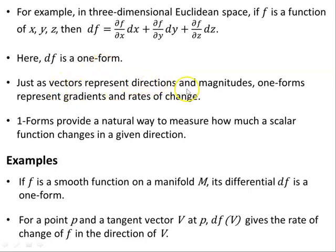Just as vectors represent directions and magnitudes, one-forms represent gradients and rates of change. One-forms provide a natural way to measure how much a scalar function changes in a given direction. And we saw that a couple of slides ago on the plot of f(x,y), where the one-form lines were close together lower down where it was steeper, and then towards the top there were no curves at all.